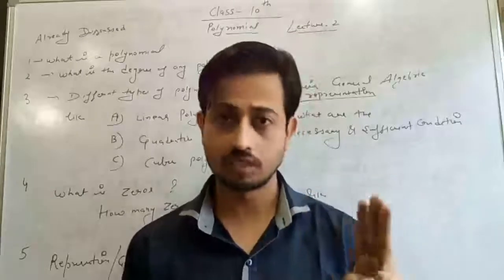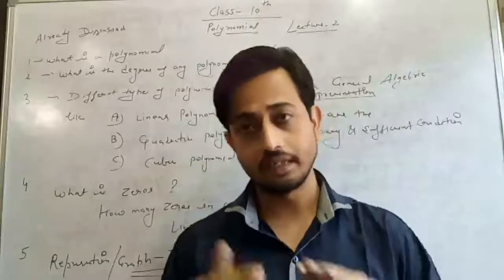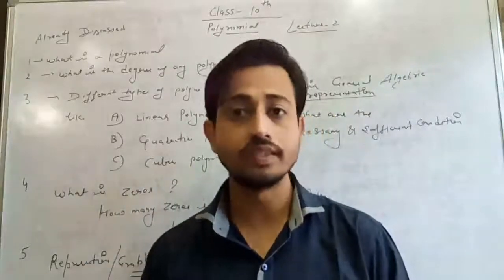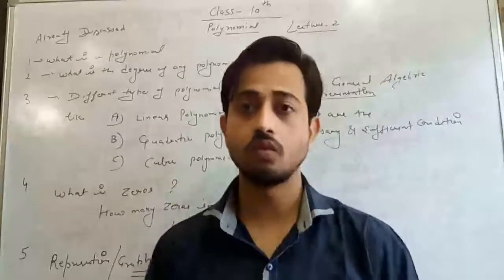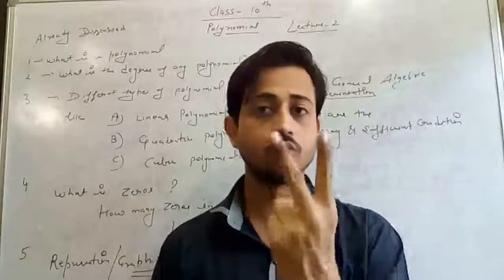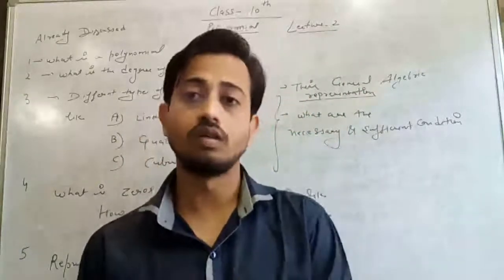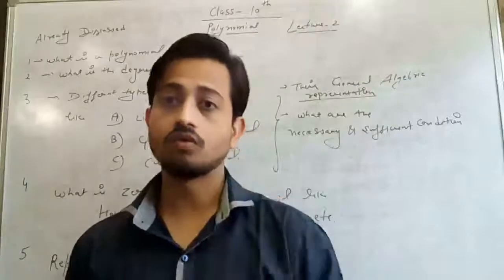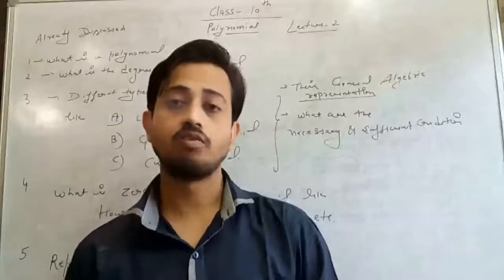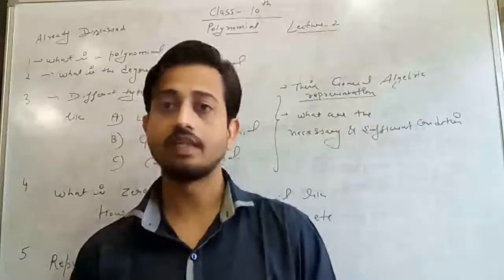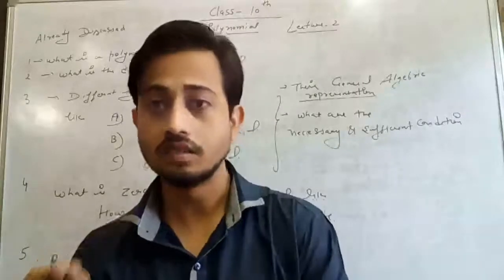We already discussed how we calculate the zeros. We took three types of polynomial — linear polynomial, quadratic polynomial, and cubic polynomial — and calculated the zeros of each. In a linear polynomial we get 1 zero, in a quadratic polynomial we get 2 zeros, and in a cubic polynomial we get 3 zeros. The number of zeros is equal to the degree of the polynomial.